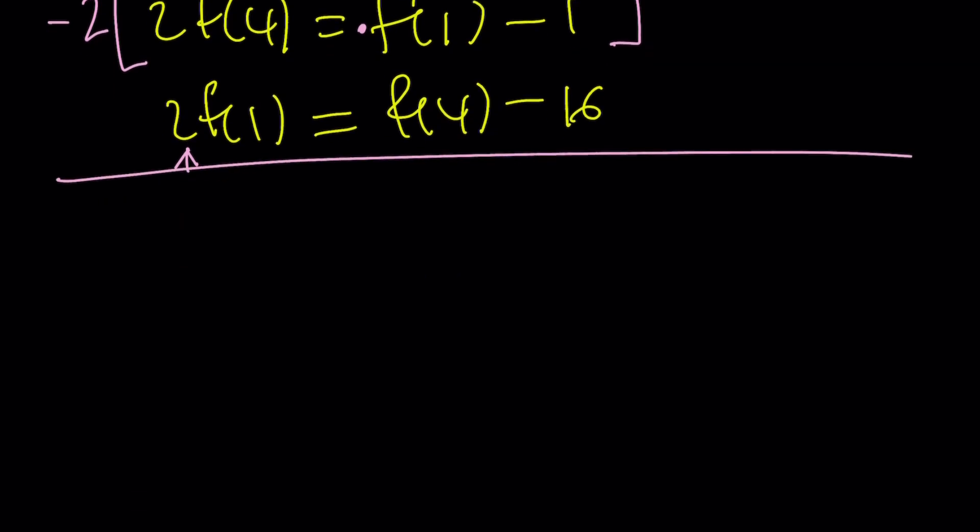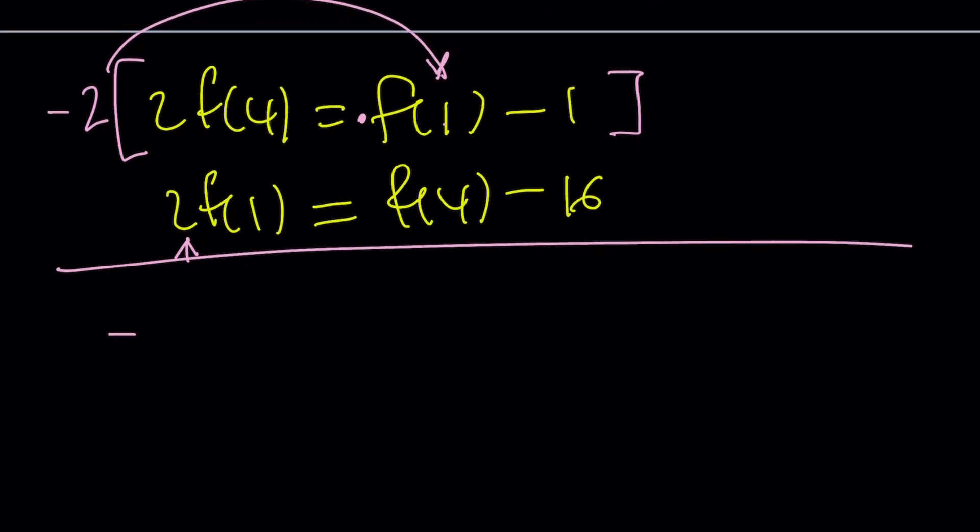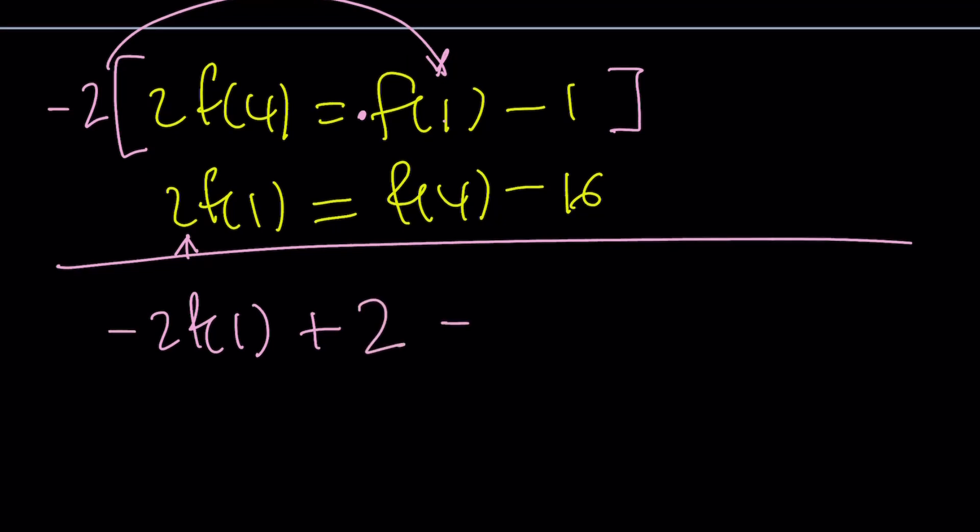That's going to give me the following. Let's go ahead and rewrite it. And this time, I want to write this on the left-hand side. So let's distribute: negative 2f of 1 plus 2 because negative 2 times negative 1 equals negative 4f of 4. So I switch sides. And the second equation stays the same: 2f of 1 equals f of 4 minus 16.